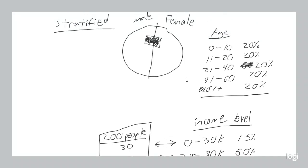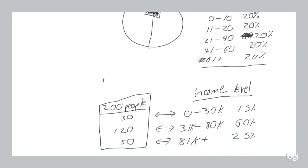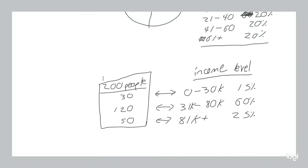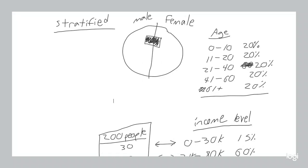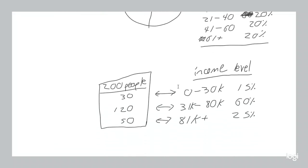Another drawback is that sometimes you'll have more than one stratum — maybe you want to consider gender, age group, and income level all at once, wanting your sample to be 50% male and 50% female, with 20% from each age group, and also representative of income levels. Finding such a sample takes considerably more effort and resources.